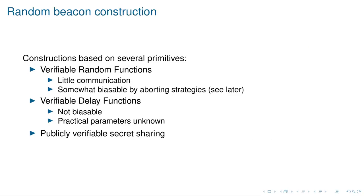There are a number of ways to construct such beacons based on different cryptographic primitives. For example, we have verifiable random functions that allow constructing beacons with very little communication, but such constructions are biasable to some extent by the adversary, by a strategy where the adversary may not communicate the output of an evaluation of such a function.